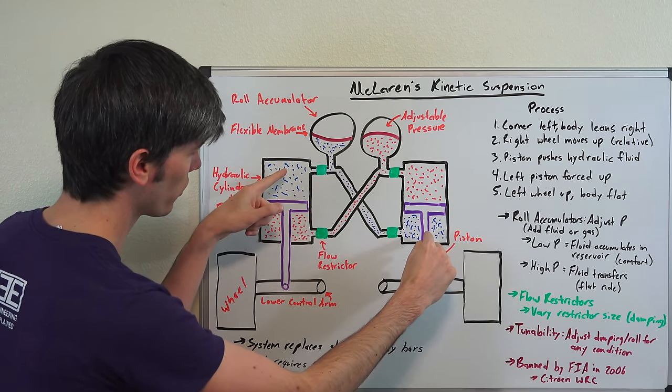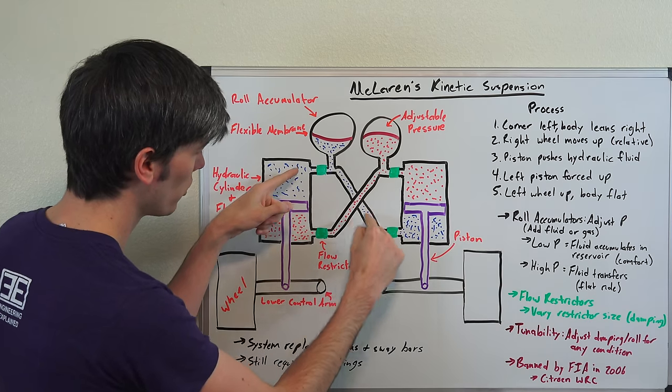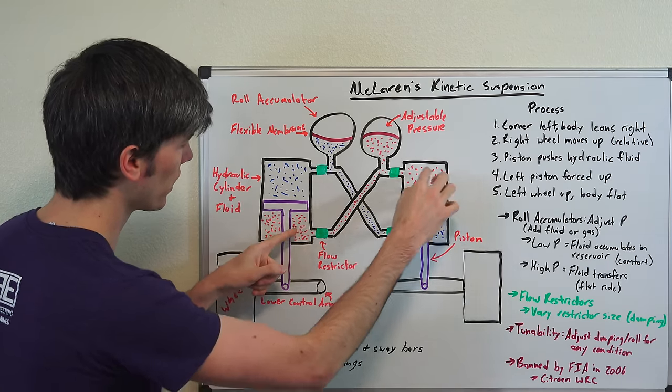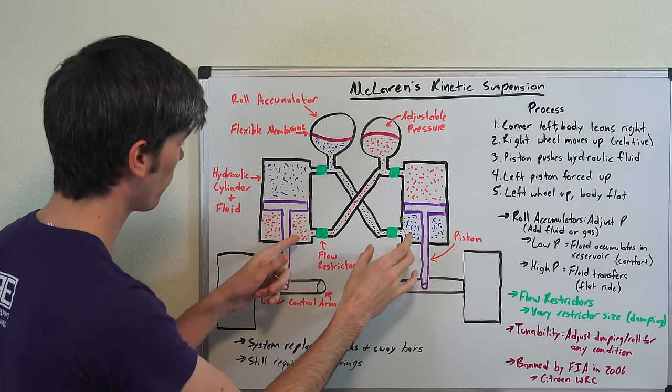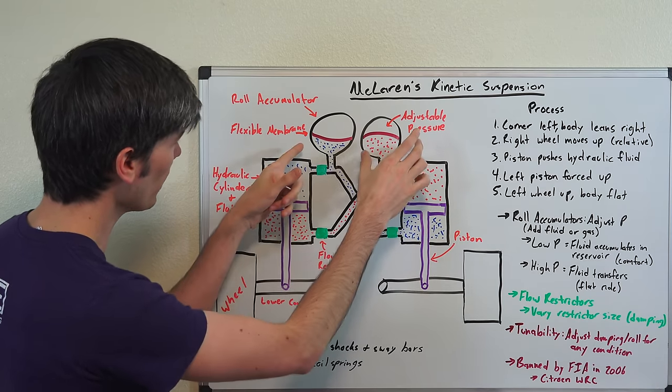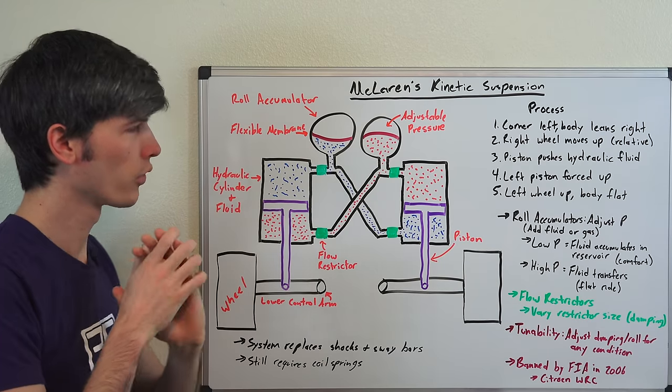And then as you can see they are connected diagonally here, so this chamber is connected via some tubing here and this is connected via some tubing here. And then we have these flow restrictors at the exits of each hydraulic cylinder and then we also have these roll accumulators.